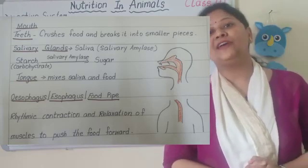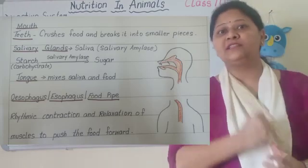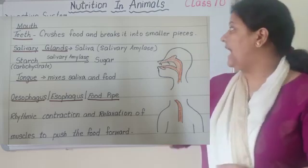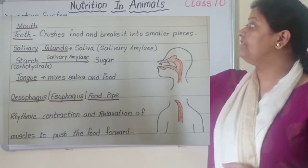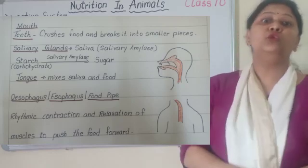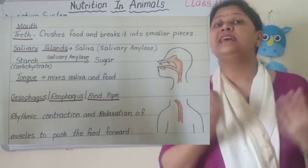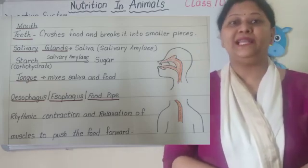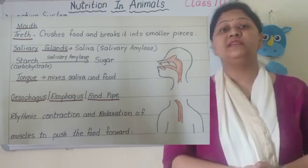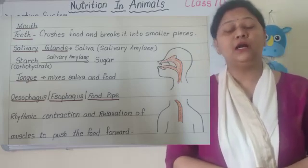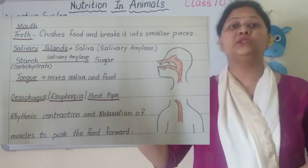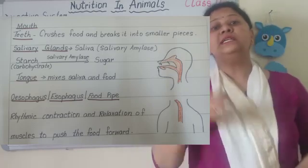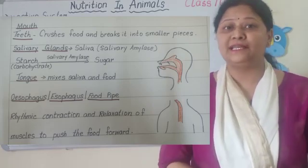What is in the mouth? Teeth — we crush and grind the food. Salivary gland, jo mouth mein hota hai, wo secrete karta hai saliva. Saliva ke andar hota hai enzyme — that is salivary amylase. Salivary amylase starch ko sugar mein convert karta hai. Starch is the form of carbohydrate.